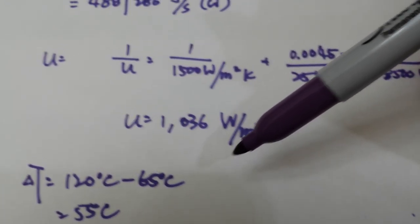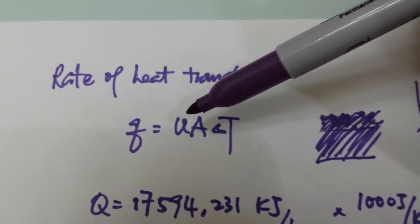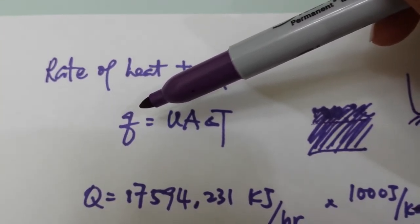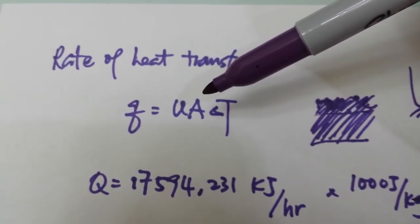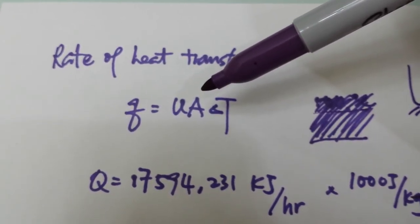You get the T. Now we have the T, we have the U, and we have the overall rate of heat transfer. Then it will be, then the rest will be quite easy.